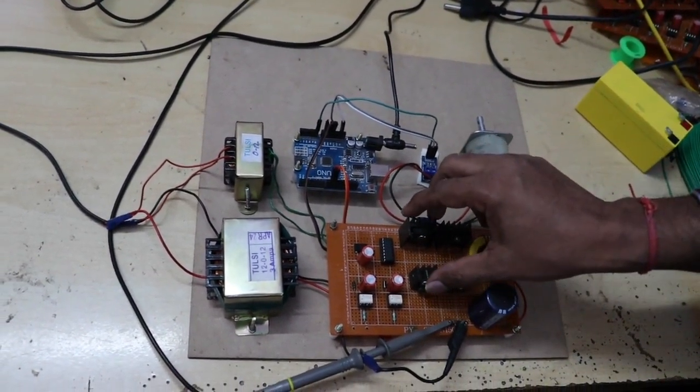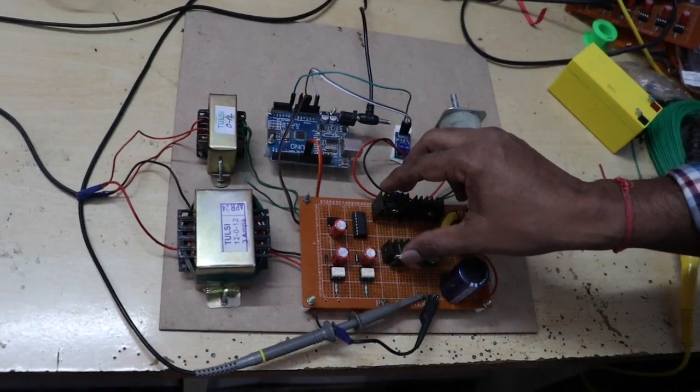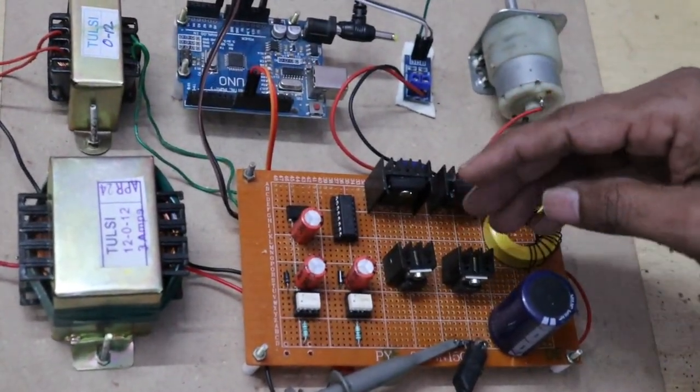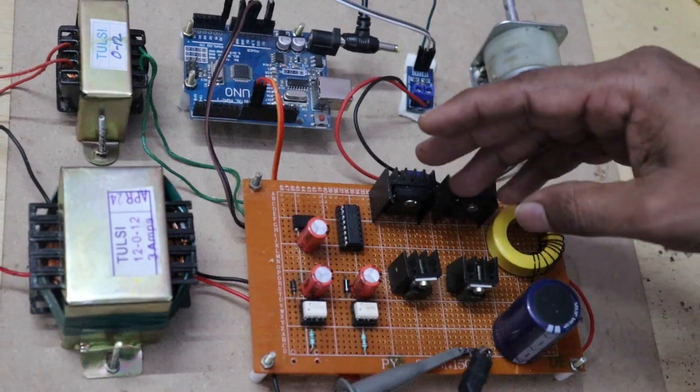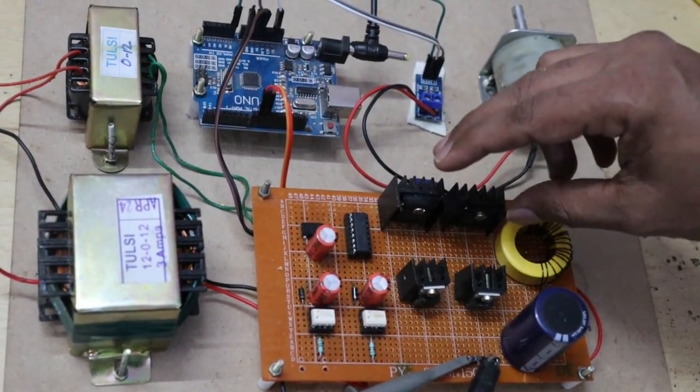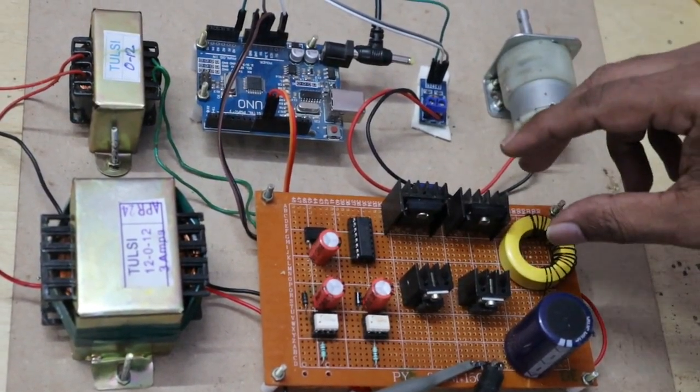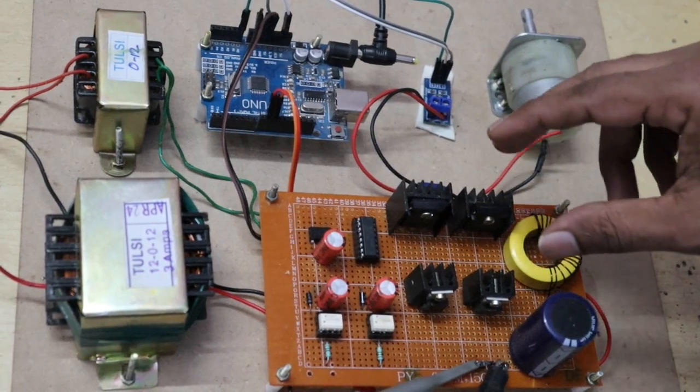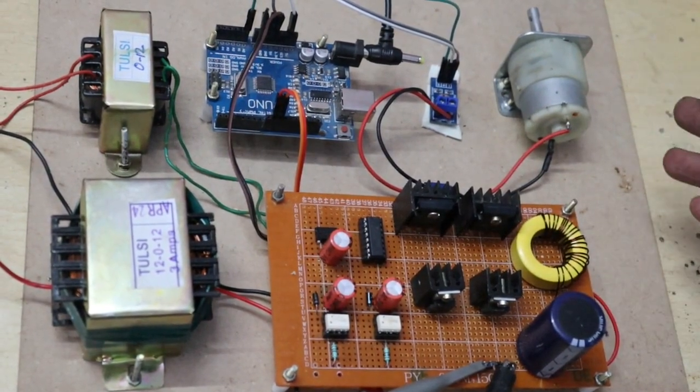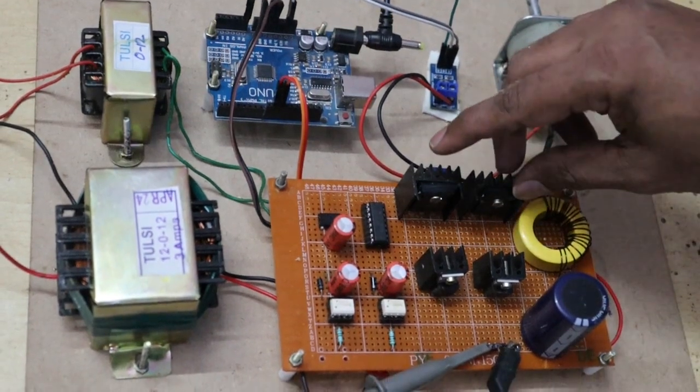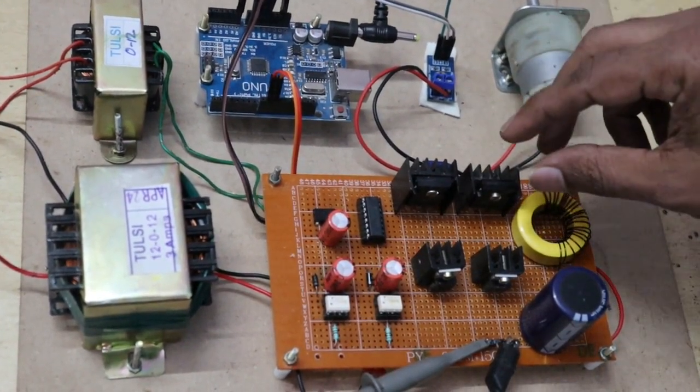This rectifier consists of two switches and two diodes. Usually we use one diode bridge to rectify, which consists of four diodes and one buck converter to reduce or control the output voltage. A buck converter consists of one diode and one switch.